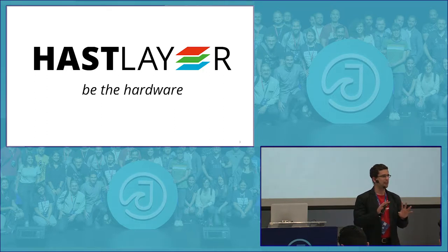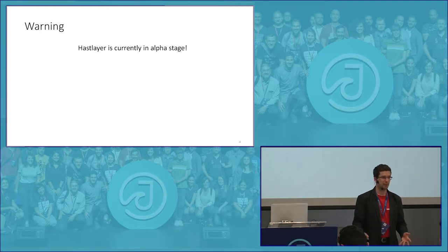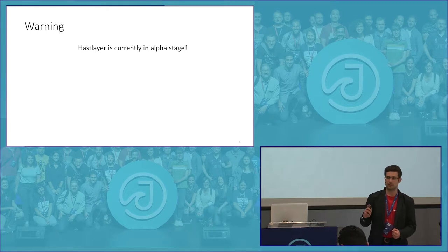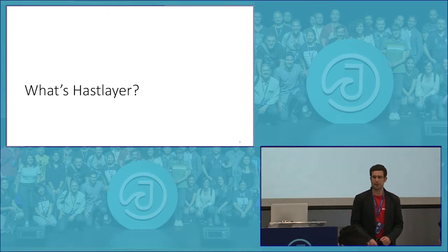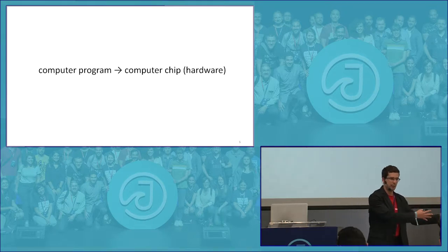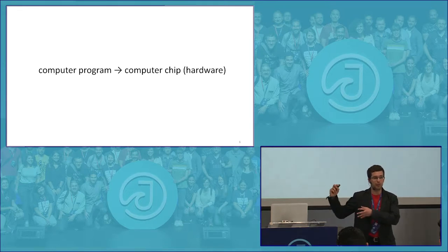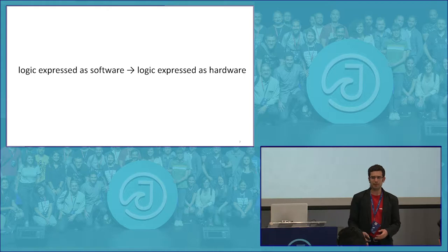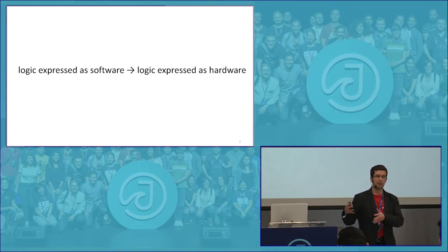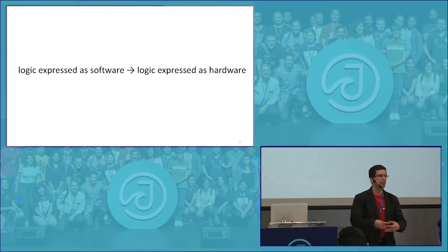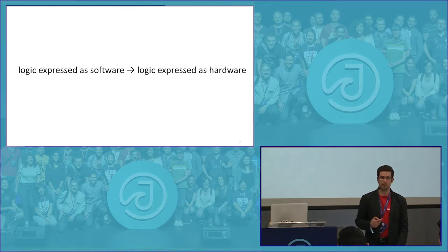Just a word of warning: Haslier, what I'll be showing today, works fairly well and has some nice results. It's already usable, but it's kind of in an alpha stage — not ready for production-level workloads yet. So, what is Haslier? Haslier is basically a tool that takes a computer program and creates an equivalent computer chip — a piece of hardware — out of it. It takes logic expressed in software form and creates equivalent logic in hardware form. The algorithm stays the same, what it computes stays the same, but the form is transformed into hardware.